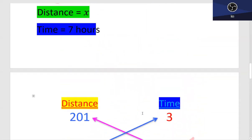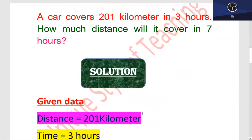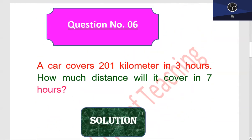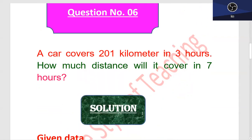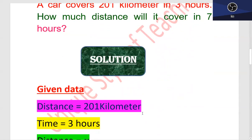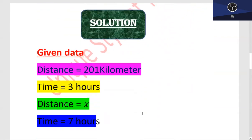If you want to review: 201 km in 3 hours, how much in 7 hours? Given data is distance equals 201 km, time equals 3 hours. Then distance equals x km and time equals 7 hours.